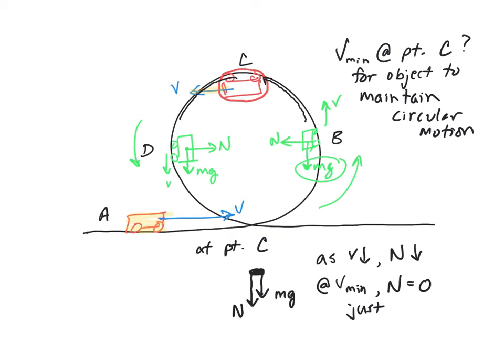And then the normal force picks up again after it passes that highest point and keeps the object going in a circle. But just for an instant, the normal force is zero.